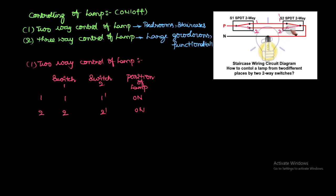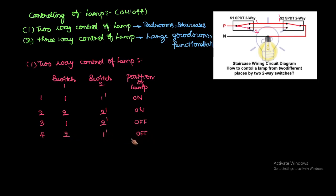Now if you connect position 1 with 2-dash instead, the circuit is broken — there is no path for current to flow, so the lamp is in OFF condition. Likewise, if you connect 2 with 1-dash, there is also a break and the circuit is in OFF condition.